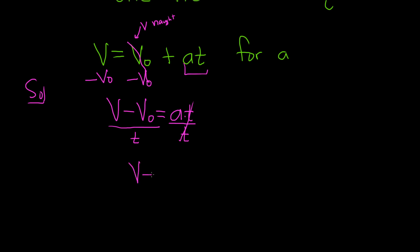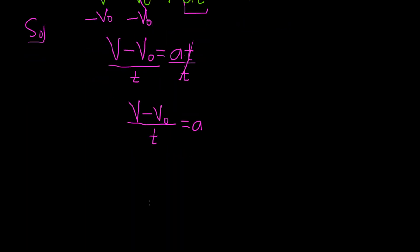So we have v minus v naught, or v sub zero, over t is equal to a. And as often happens in these problems, we're left with what we're trying to solve for on the right.